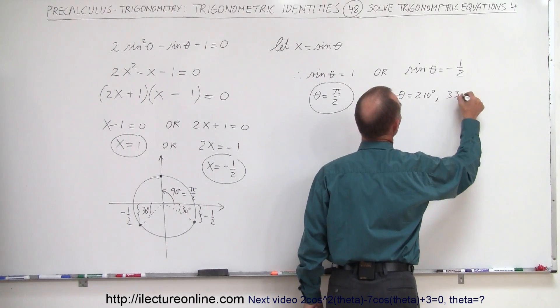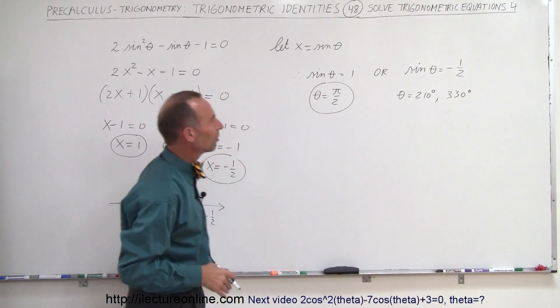So here we can say that theta must equal 210 degrees or go the way around that's 360 minus 30 or 330 degrees. And of course, we can convert that to radians if you like.